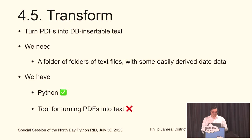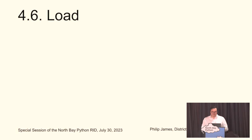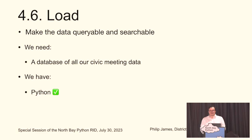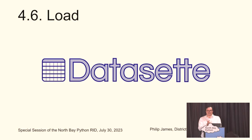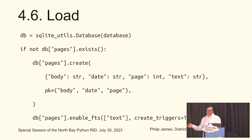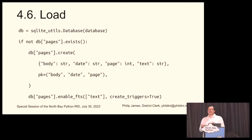We now have a tool for turning PDFs into text. Let's load it — making the data queryable and searchable. We need a database of all our civic data; we have Python and we have Dataset. Dataset is maybe the best software for data analysis I've used in the past three years — it's got a rich plugin community. The real magic in the loading code is that 'enable FTS' at the bottom — that's going to let us do full text search over the text field we're creating in the database, which is going to become very useful soon.